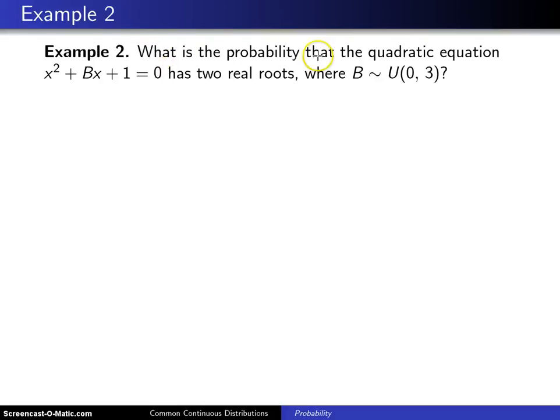What is the probability that the quadratic equation x squared plus bx plus 1 equals 0 has two real roots where b is uniformly distributed between 0 and 3?